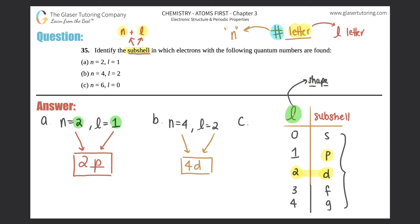Last but not least, part (c): n = 6, l = 0. Number then letter — we have six for the n, and l = 0 represents s, so this would be a 6s subshell. Box that answer off. Easy as pie!